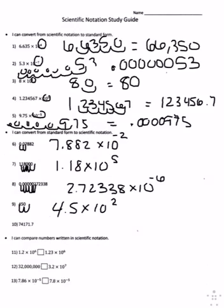And number ten, you move the decimal one, two, three, four times, and get 7.41717 times 10 to the fourth power.